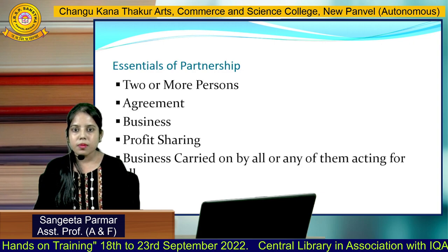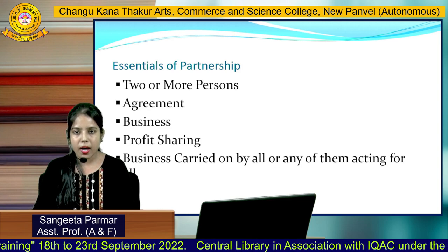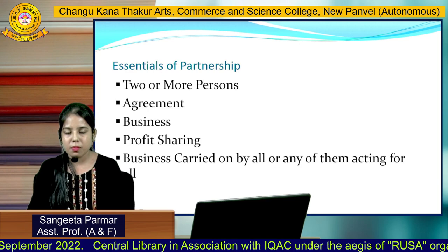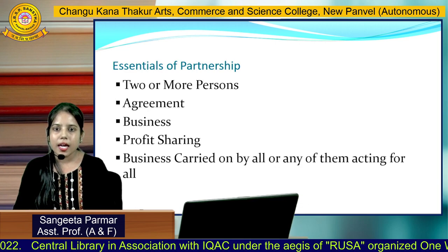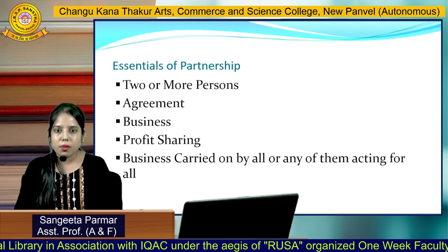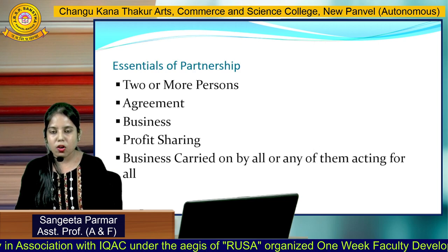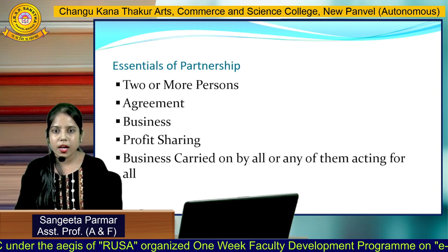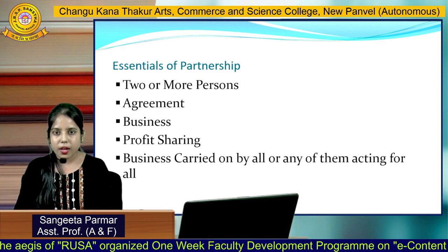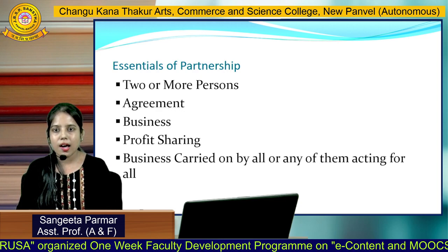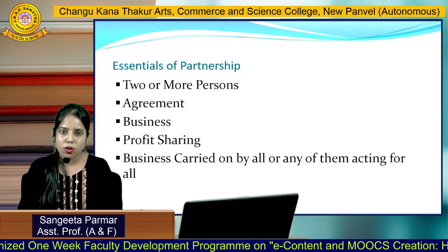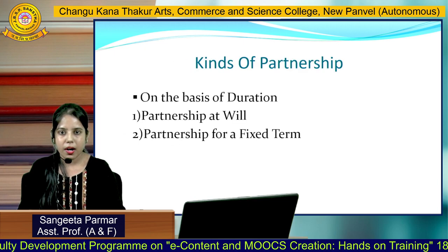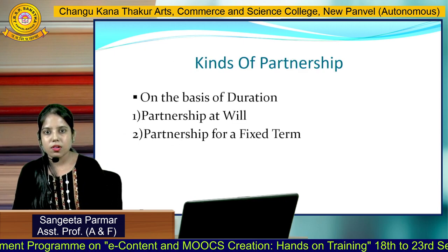The fifth essential is business carried on by all or any of them acting for all. For example, if A and B are partners and B is unable to act, then A can act on behalf of B. Similarly, if there are partners A, B, and C and A and B are unable to carry out the business activities, then C can act on behalf of A and B.